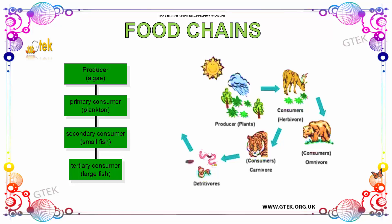Now we are going to see about food chain. The first stage is producer, then primary consumer that is plankton, secondary consumer which is small fish, and tertiary consumer that is large fish. These are called a food chain.